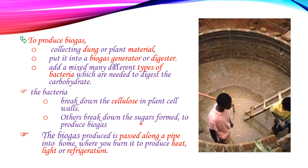Other bacteria break down the sugars — the carbon and hydrogen compounds. The biogas produced is passed along a pipe into a home where you burn it to produce heat, light, or refrigeration.